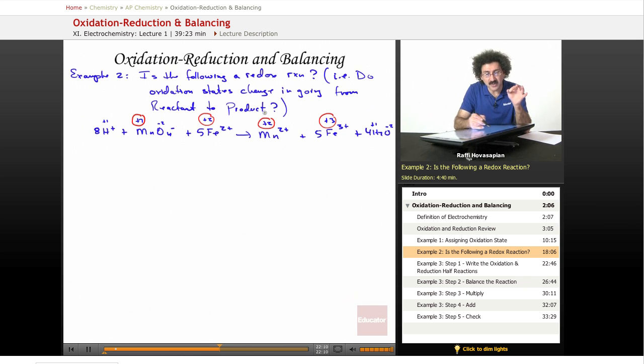Iron, +2 to +3, it's been oxidized. Oxidation is actually an older term than reduction was. That's why we call it oxidation and reduction. That's why it doesn't seem to really jive all that well. +2, +3, this has been oxidized.